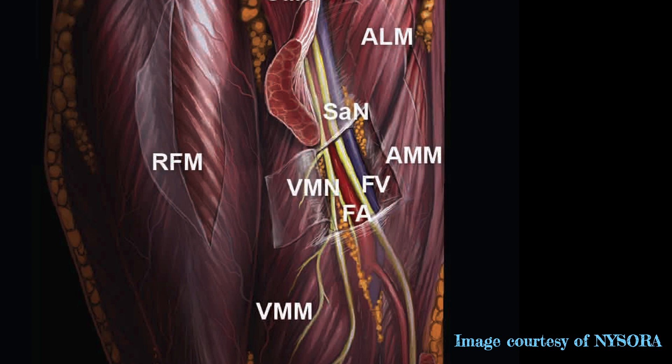In the early days of adductor canal block, the goal was to block the saphenous nerve somewhere along the anterior medial thigh. While there is controversy about nomenclature and anatomy for this technique, for our purposes we'll consider the adductor canal block to occur at the midpoint of the thigh. The goal is to put local anesthetic just next to the artery, a convenient and highly visible target.